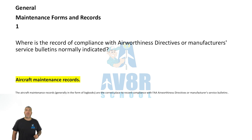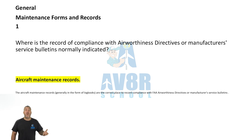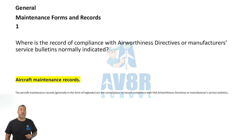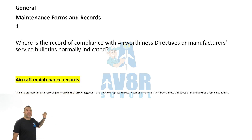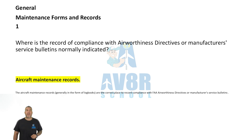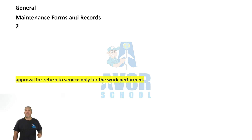Number one: Aircraft maintenance records. Where is the record of compliance with airworthiness directives or manufacturer service bulletins normally indicated? They are indicated in the aircraft maintenance records.